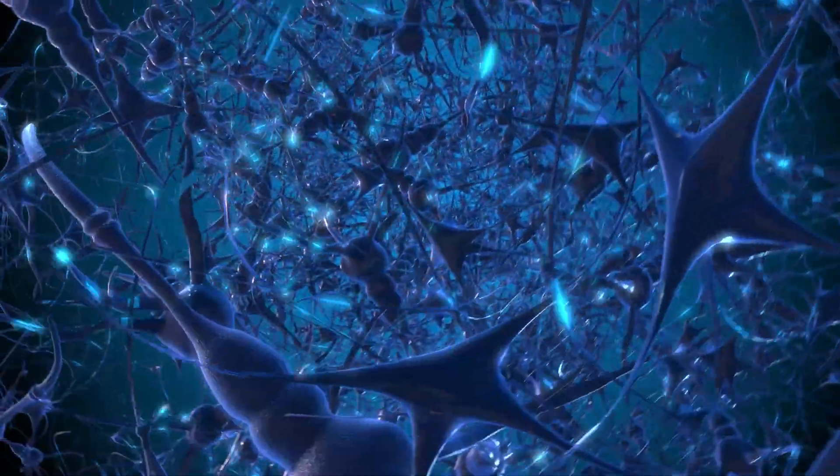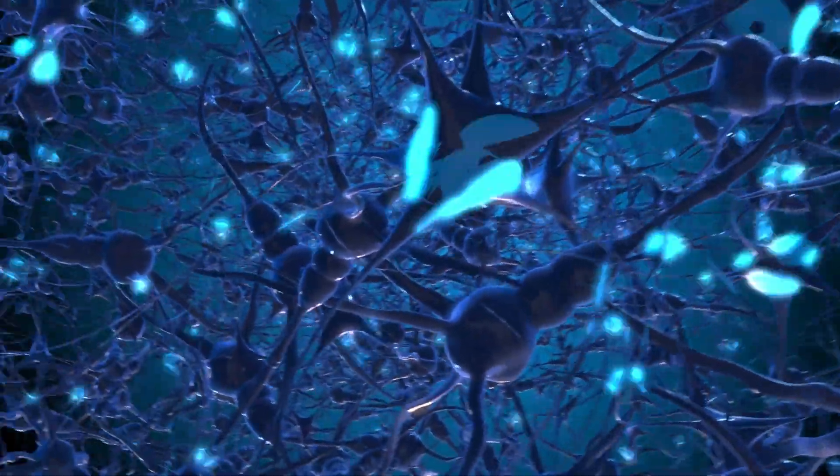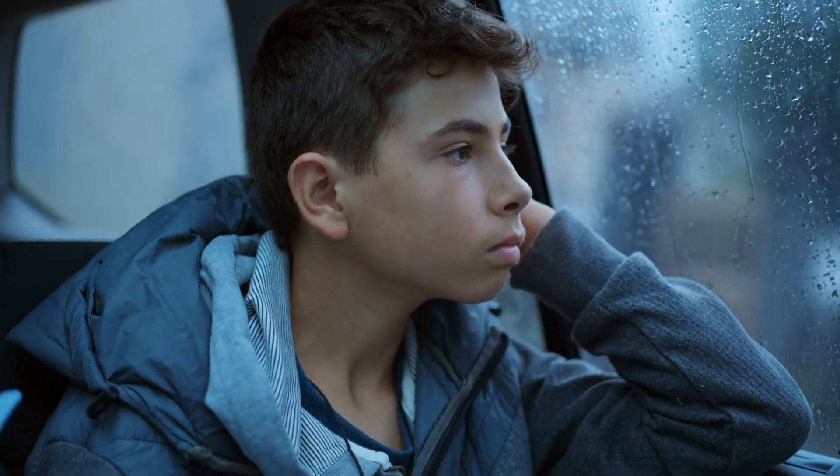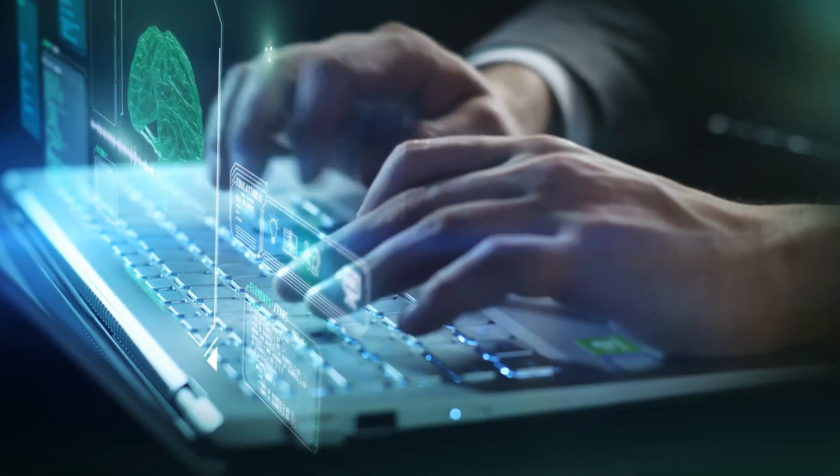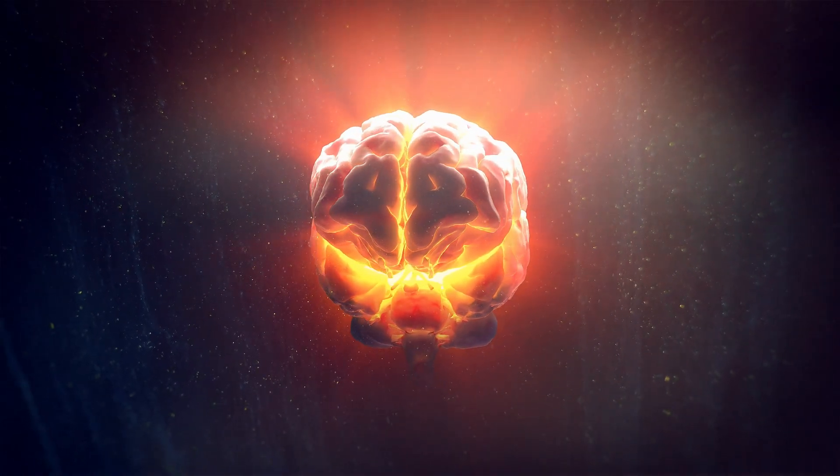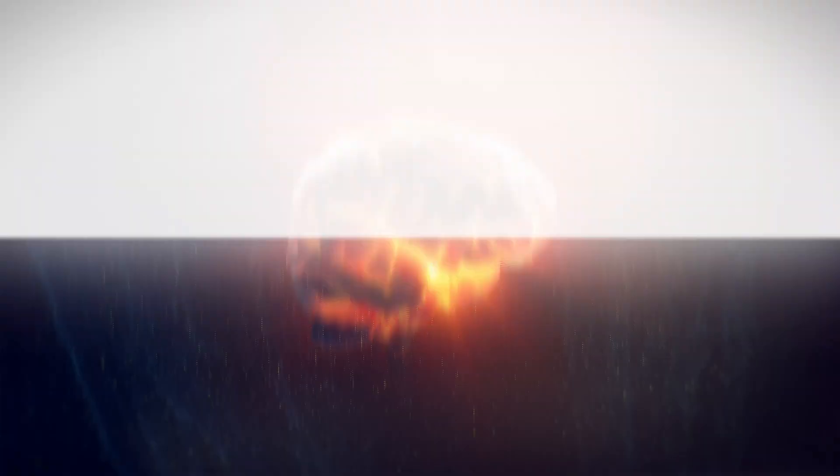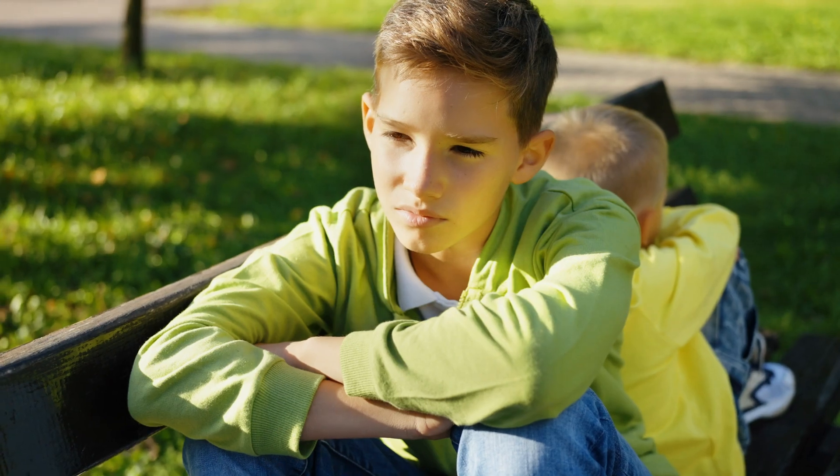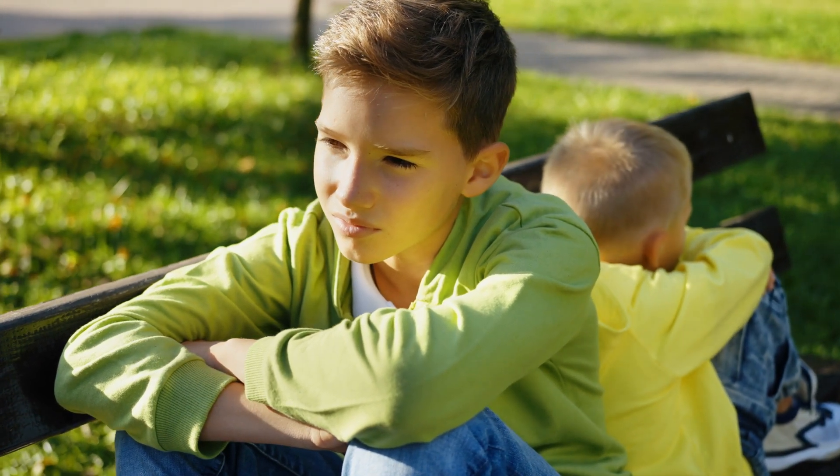At the same time, the limbic system, responsible for reward processing, is highly active during the teenage years. That means teens are hardwired to seek validation, peer approval, and novelty. All things social media is engineered to exploit. This creates a dangerous feedback loop. A developing brain gets flooded with dopamine rewards, while the systems needed to regulate that behavior aren't fully online yet. Studies have even shown structural changes in the brains of heavy teen social media users, particularly in areas linked to attention, emotional sensitivity, and self-control.